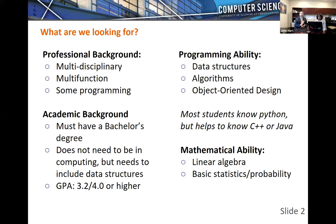We also have a new course called CS 400, an accelerated computer science fundamentals course. If you don't have that data structures course, we can show you how to enroll in CS 400. That course doesn't count towards the master's degree, but it can give you the background computing knowledge necessary to enroll in our graduate-level courses. The degree itself consists of eight graduate-level computer science courses at the 400 level and higher.